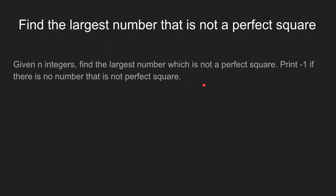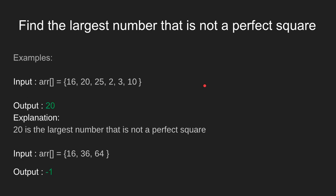Now let's clarify with examples. In the first example, we have taken input as arr = {16, 20, 25, 2, 3, 10}. The output should be 20, as it is the largest number that is not a perfect square among all the non-perfect square numbers.